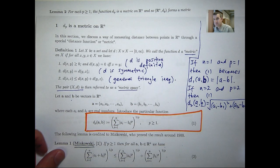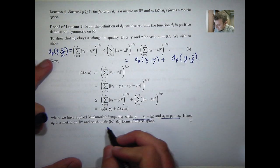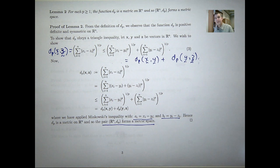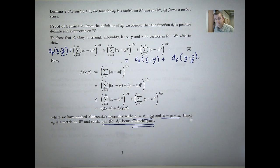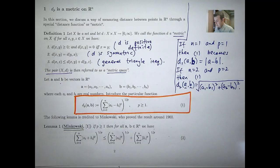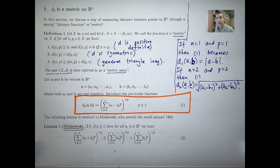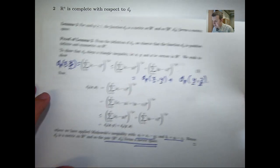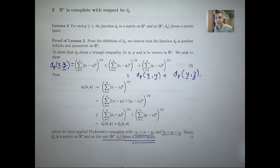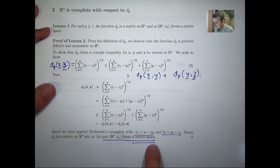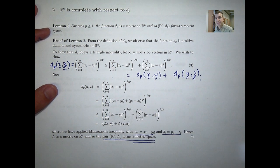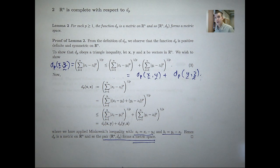So d sub p really is a metric on R^n and the pair (R^n, d sub p) forms what's known as a metric space. One motivation for putting this presentation together was using this general metric in my own research, and I'll release those results in due course on YouTube. In the follow-up video I'm going to go a little bit further and show that this pair is a special metric space called a complete metric space, so I hope you'll join me for that.